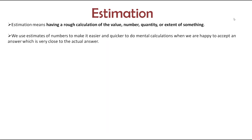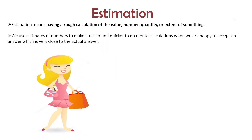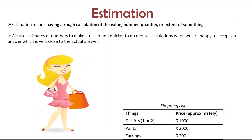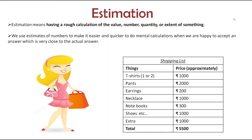Let's assume you are going for shopping. You make a list of things which you are going to buy and guess the price so that you can take approximate money with you. So this is our shopping list, and I have given approximate prices for each thing, plus extra rupees 1000 in case we like something else. We did not take the exact price. For a t-shirt, I assumed rupees 1000; for pants, rupees 2000; for earrings, rupees 200, and so on. Approximately, I am taking rupees 5500 for shopping — we may need less than this also.